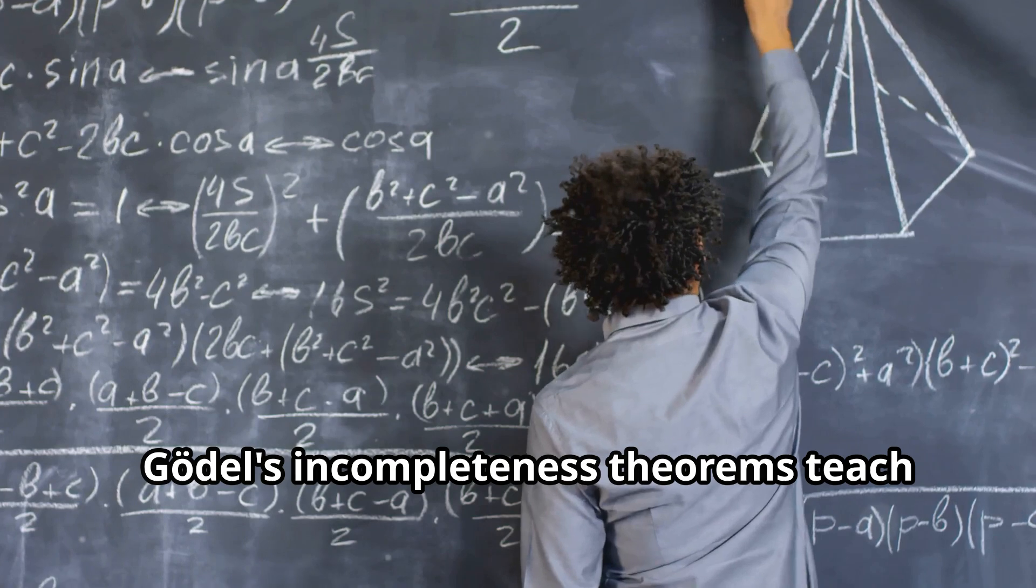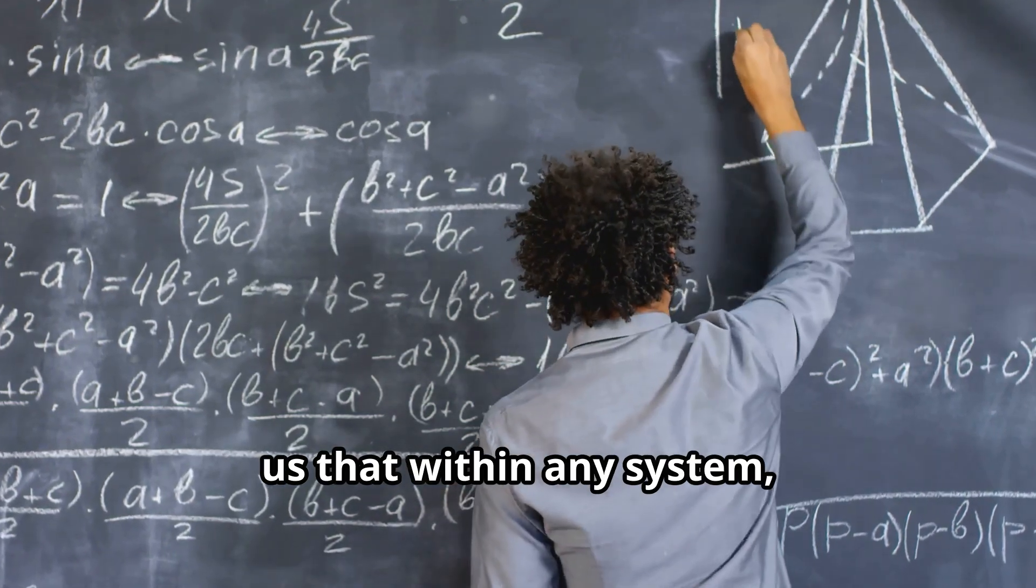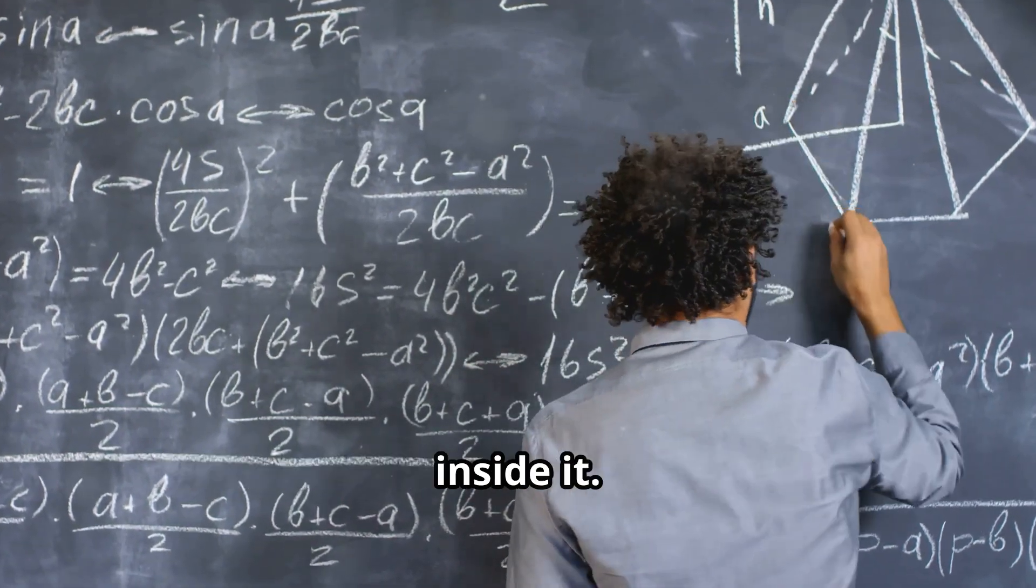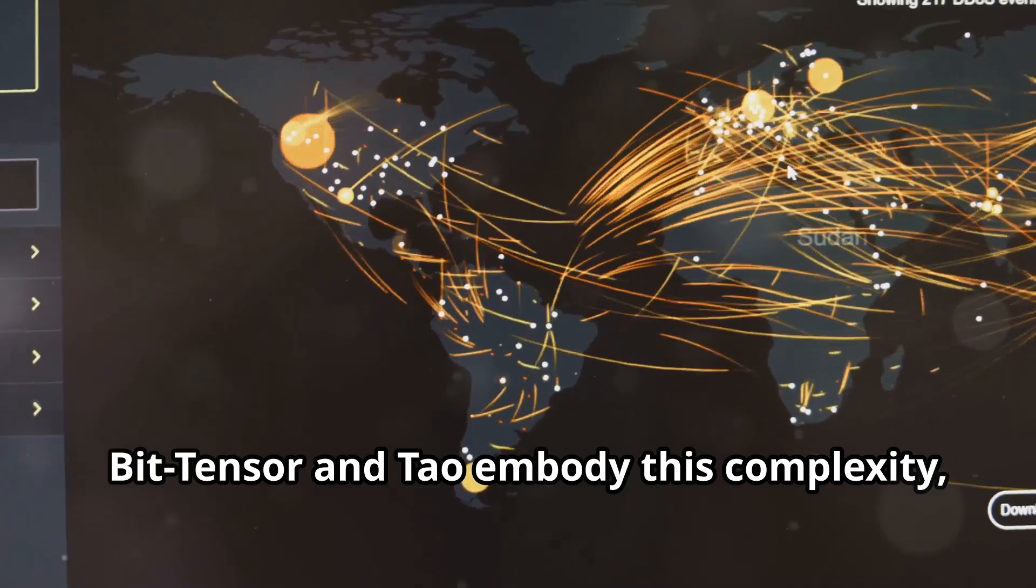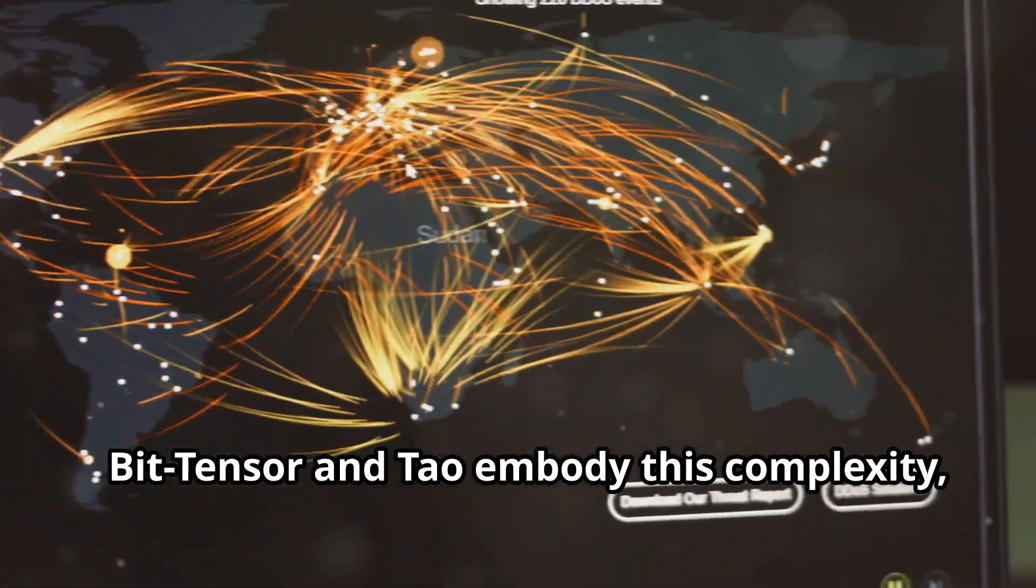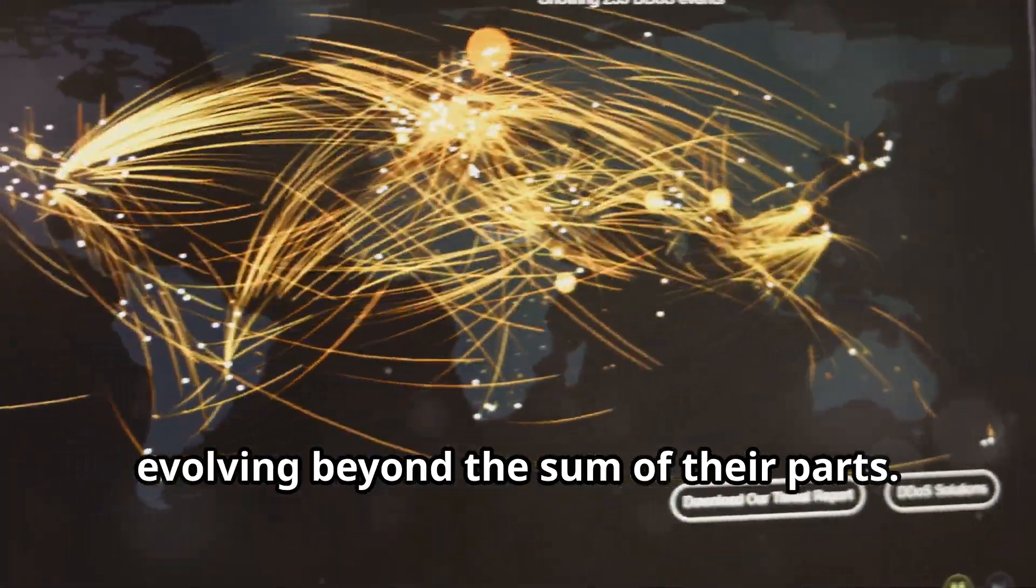Gödel's incompleteness theorems teach us that within any system, there are truths that can't be proven inside it. BitTensor and Tau embody this complexity, evolving beyond the sum of their parts.